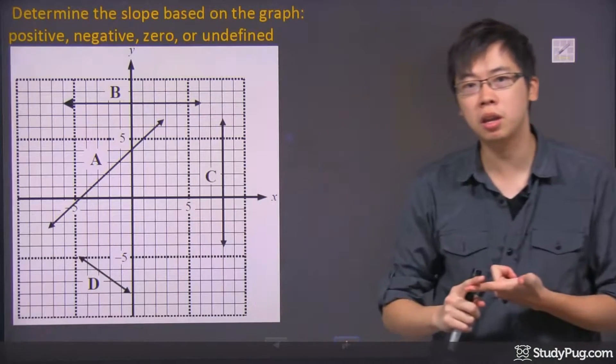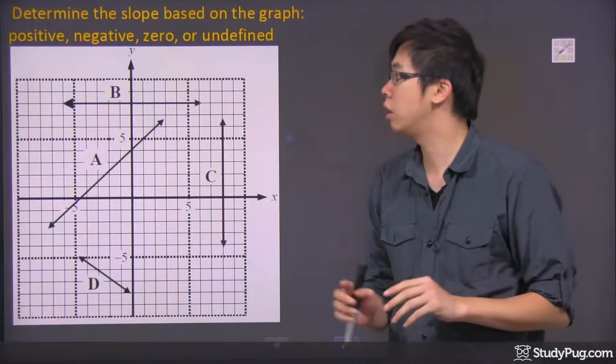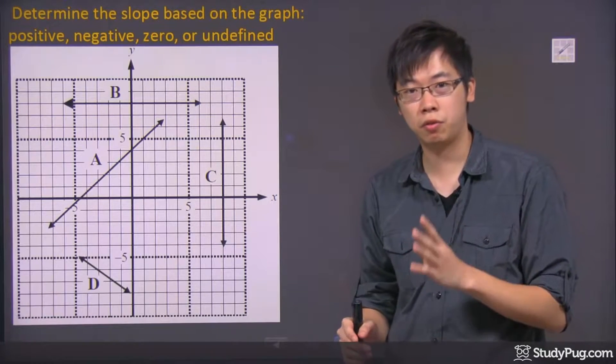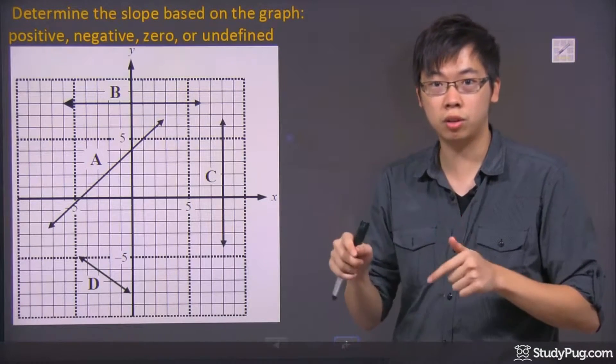So we got the positive, we got the negative, we got the zero, we got the undefined. Now there are only four types of slope we're going to work on for this section right here.